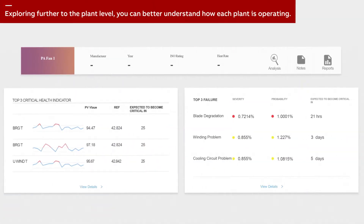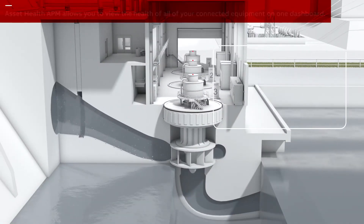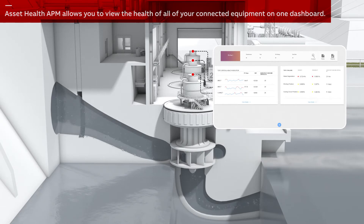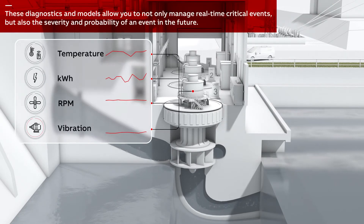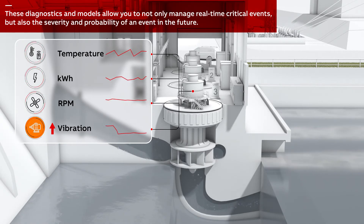Exploring further to the plant level, you can better understand how each plant is operating. Asset Health APM allows you to view the health of all of your connected equipment on one dashboard. These diagnostics and models allow you to not only manage real-time critical events, but also the severity and probability of an event in the future.